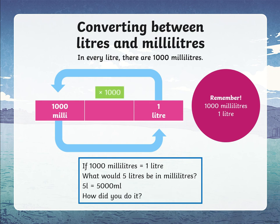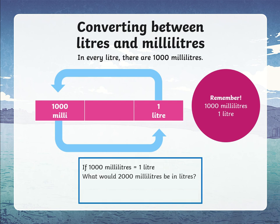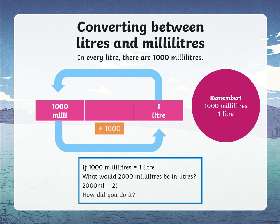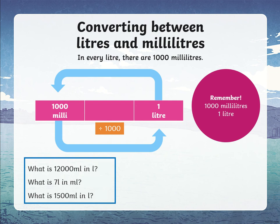If 1,000 milliliters equals one liter, what would 2,000 milliliters be in liters? Since we're switching back to liters, you need to divide by 1,000. Remember, 1,000 has three zeros, so you take away the three zeros — that gives you 2 liters. So 2,000 milliliters equals 2 liters.